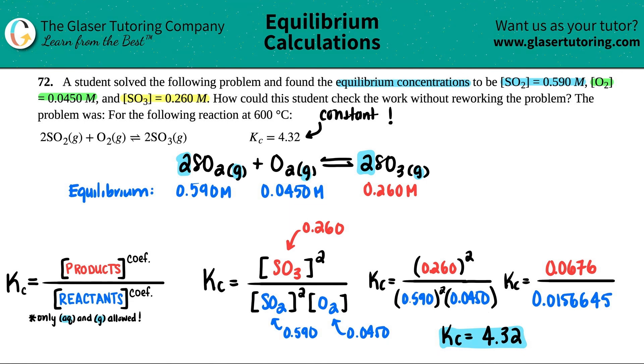Then if it checks out like it did in here, you know you did it correct and move on to the next question. If you get something like 40.3 or something, go back and fix your numbers. So hopefully this worked. I mean, the question said how could this student check the work without reworking the problem? Basically you do this whole thing.